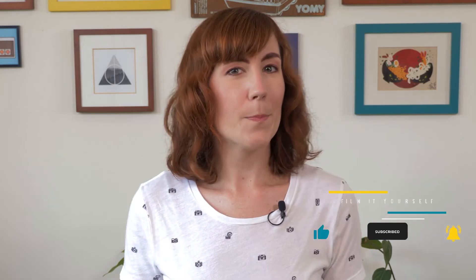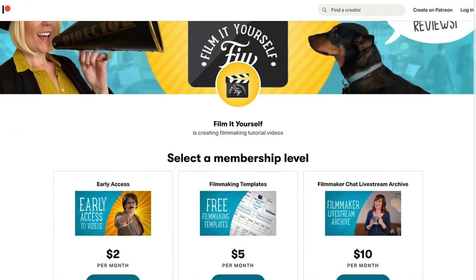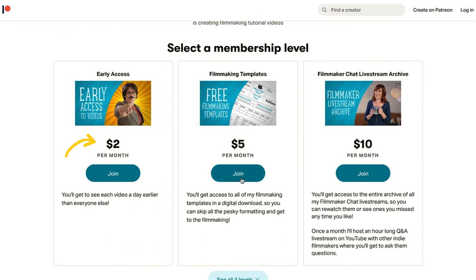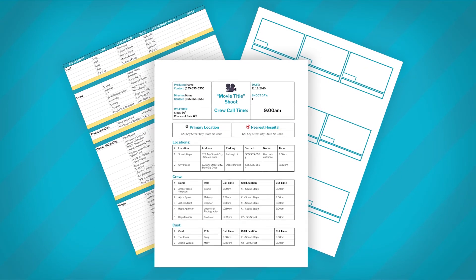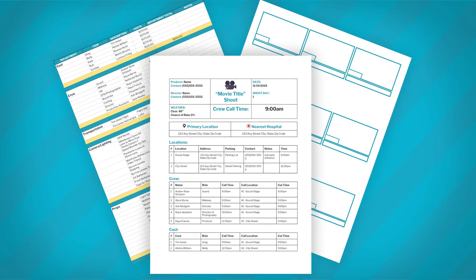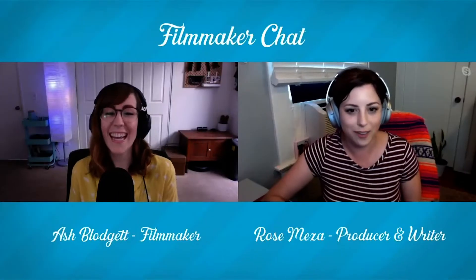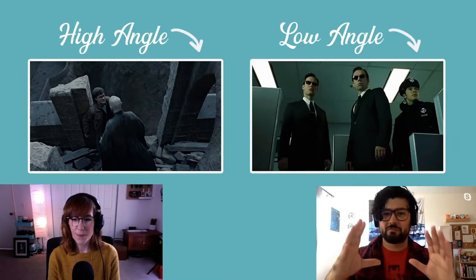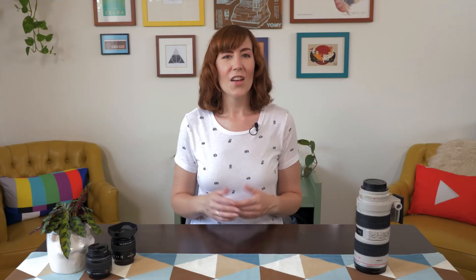For more on different types of shots, check out my video here. So there you go — now you're sure to be focusing the audience's attention with aperture. If you're looking for a more in-depth focus on filmmaking, you can get access to all of my videos a day early by supporting me on Patreon for the low cost of just $2. Plus, at higher tiers you can get access to all of my filmmaking templates and watch all of my filmmaker chats where I sit down with other filmmakers and get their filmmaking tips. There's a link to my Patreon account in the description below so you can join the F.I.Y. Patreon crew.